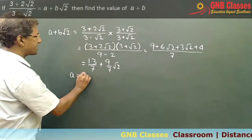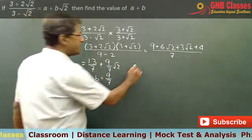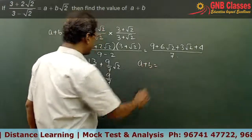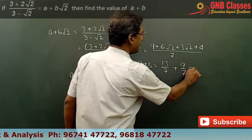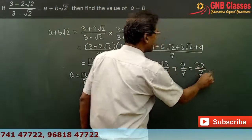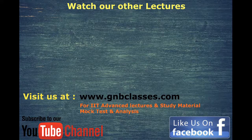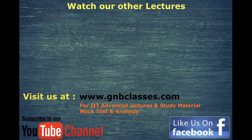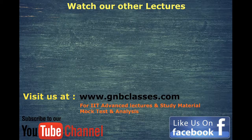Comparing with a + b√2, we get a = 13/7 and b = 9/7. Therefore, a + b = 13/7 + 9/7 = 22/7.